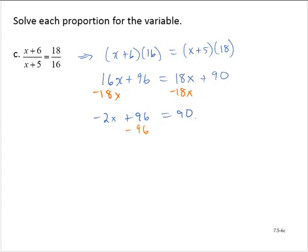I'll subtract 96 from both sides. So then negative 2x is equal to negative 6. And divide through by negative 2, yielding x is equal to 3.